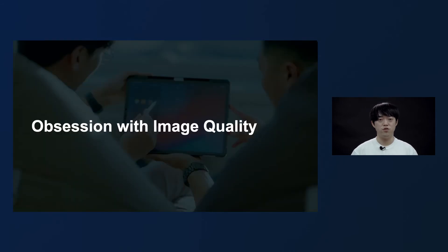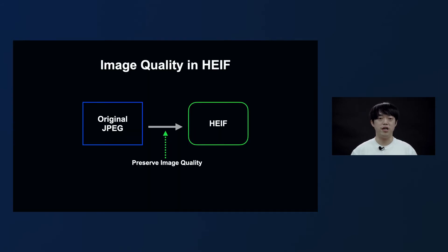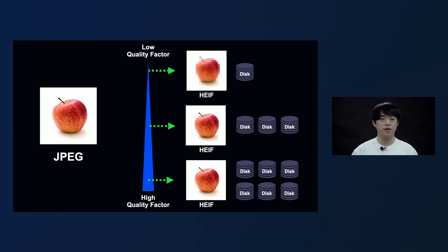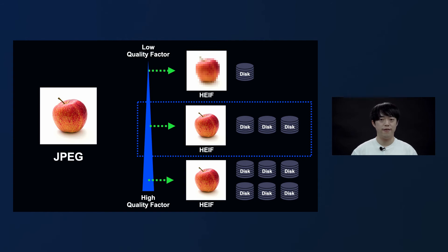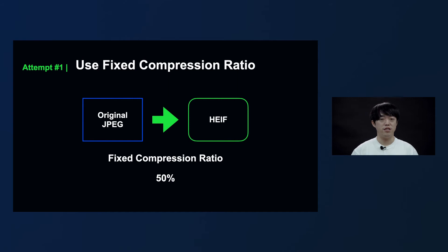Next, I will talk about the work put in to maintain image quality when converting images. Antman converts JPEG files to HEIF files to save storage space. Similar to the DQT in JPEG format, HEIF also has a quality factor. The optimal quality factor has to be found for HEIF as well to maintain image quality. When converting to a HEIF file, the quality factor is related to image quality and file size, and we have to find the quality factor that will keep the file at the right size without damaging the image quality.